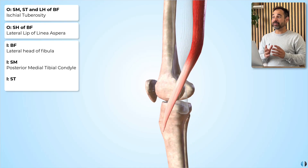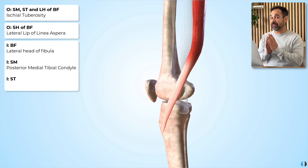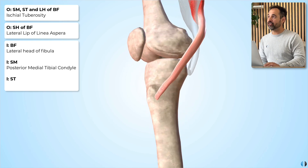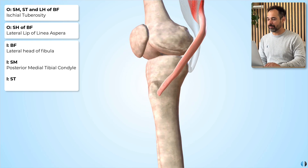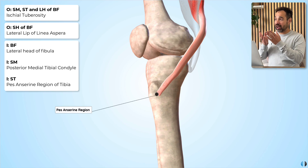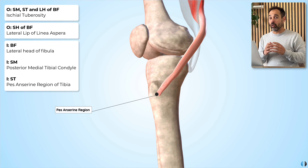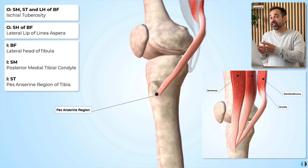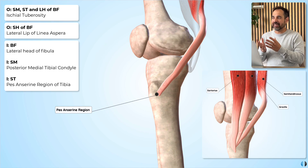Semitendinosus has perhaps the most interesting insertion. This muscle sits in the centre of the hamstring muscle bellies; however, it crosses over the semimembranosus tendon in order to insert into the anteromedial part of the tibia at the pes anserine region. There are a couple of muscles that insert here — semitendinosus, but also sartorius and gracilis. Therefore, when patients present with pain around this region, we consider this a pes anserine tendinopathy, which could involve any one of these three tendons.